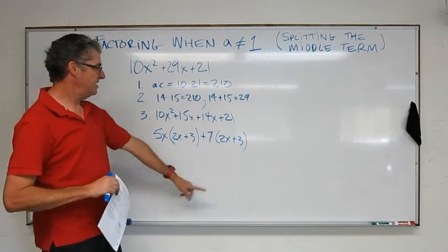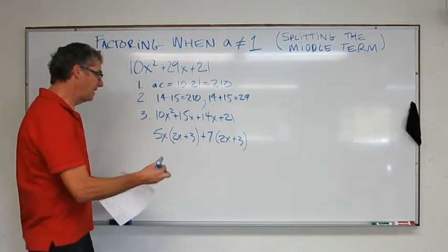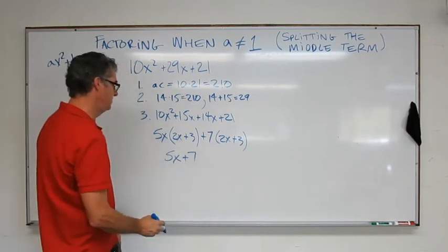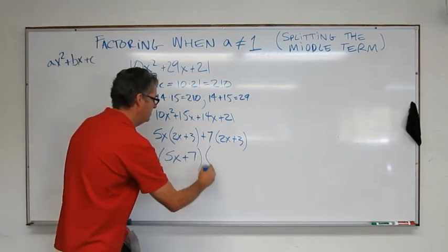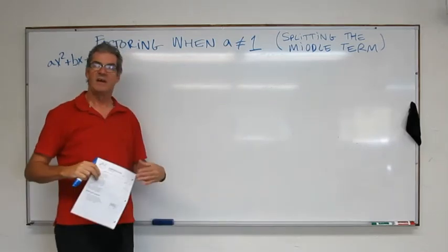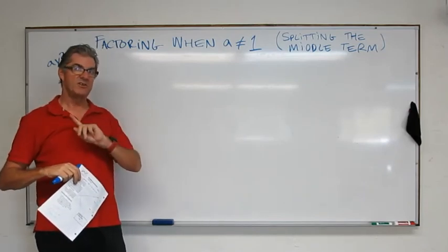Okay. So check this out. 2x plus 3. 2x plus 3. We're there. These two match. So now my last step is 5x plus 7 times 2x plus 3. There you go. Okay. I have two more for you. But this time, I'm going to put it a little bit more on you.